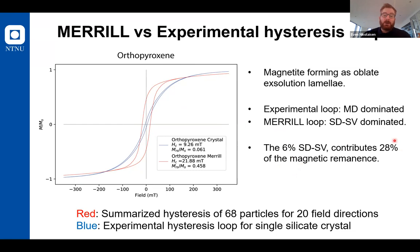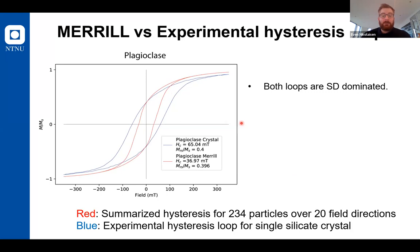Of this 6%, we actually calculated that this curve has about 28% of the overall magnetic remanence. We did the same thing for another area in plagioclase. Here we can see that both of the loops are actually single domain dominated, so we do estimate that we are able in the plagioclase to capture the overall representation of the remanence of the particles that are included.